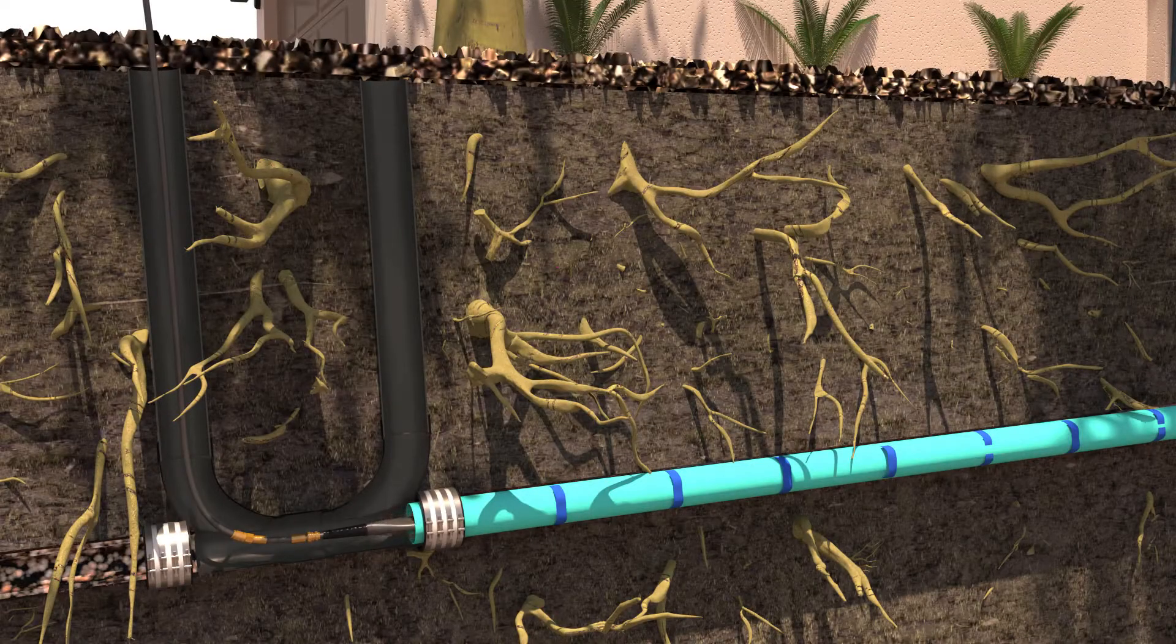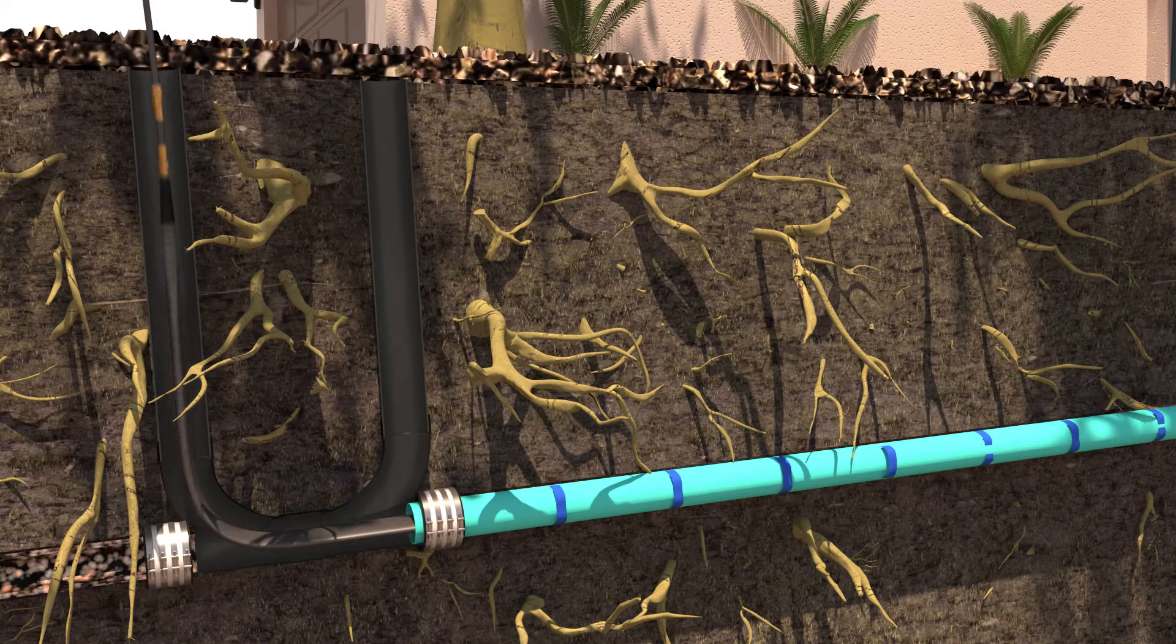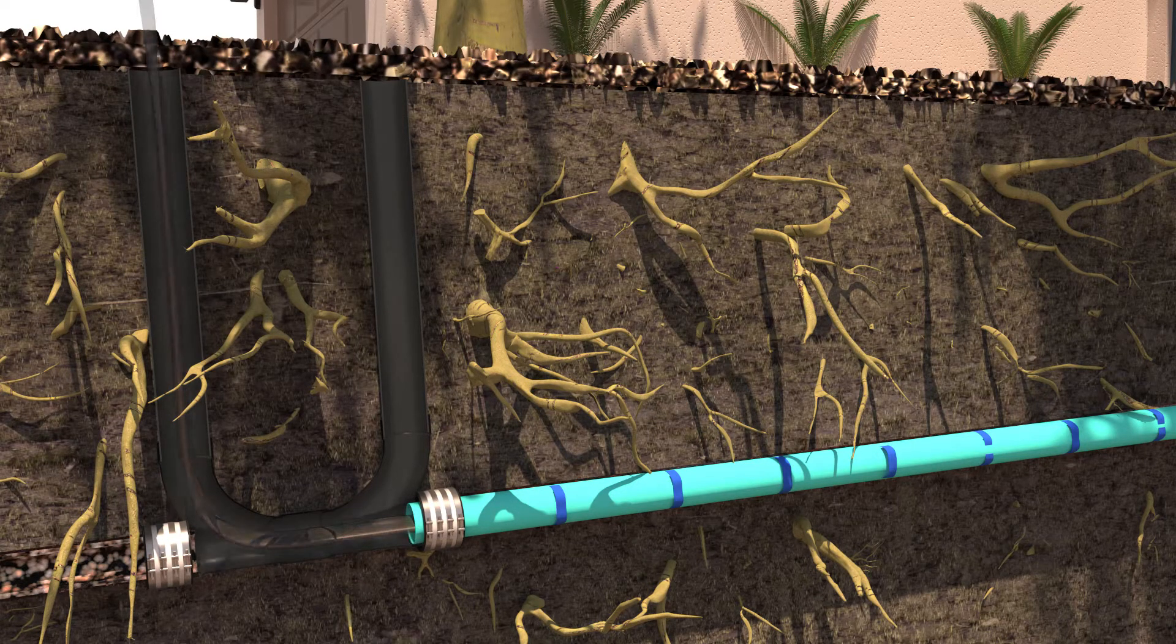Once fully cured, the air bladder is deflated and removed, leaving a fully rehabilitated pipeline. Lateral lines blocked by the new liner are then reopened by a robotic grinder.